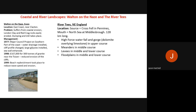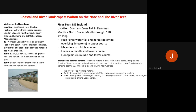The River Tees management case study: the River Tees is in the northeast of England, starting at Cross Fell in the Pennines and reaching the North Sea at Middlesbrough. It is 128 kilometres long and has High Force waterfall with a gorge, a large open area in the upper course, meanders in the middle course, levees in the middle and lower courses to reduce flooding, and flood plains in the middle and lower courses.